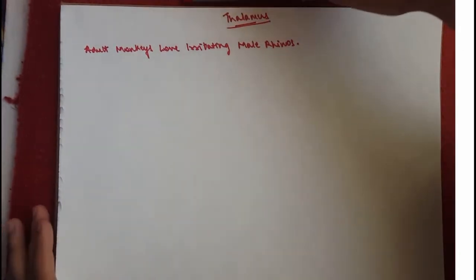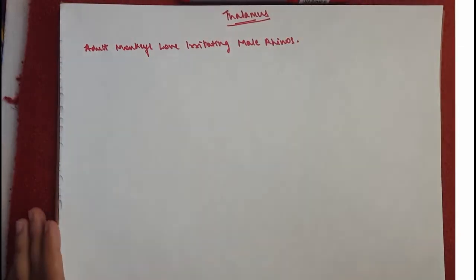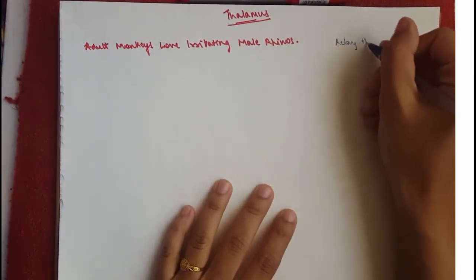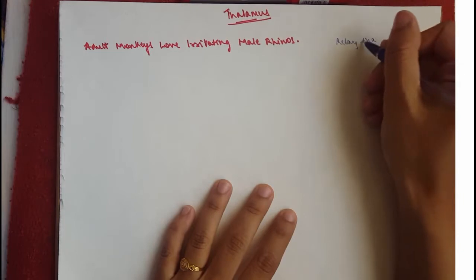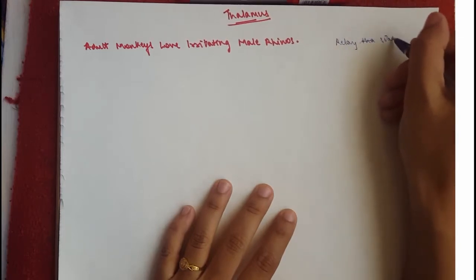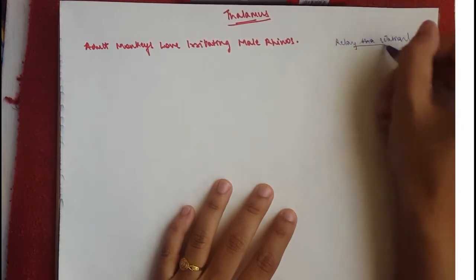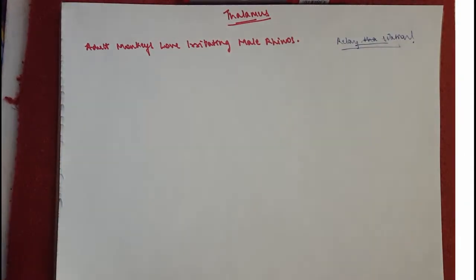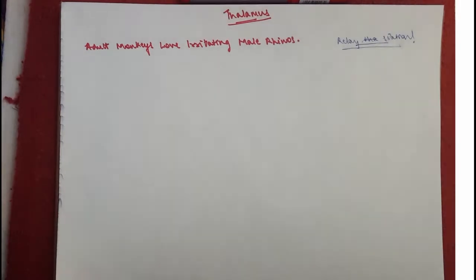So a bit about the thalamus. It's the processing and distribution center, a relay station. The thalamus is an important structure. It's a relay station so it's got quite a lot of functions obviously because the relay station is within the cortex so it's for consciousness, sleep, memory, etc.